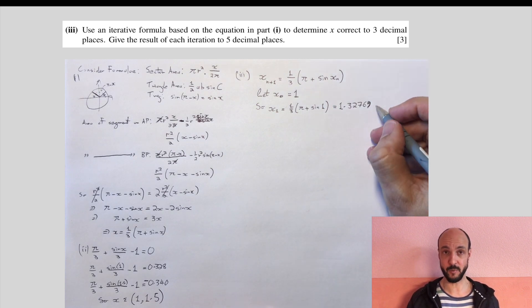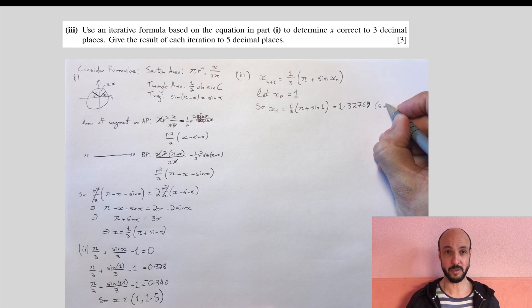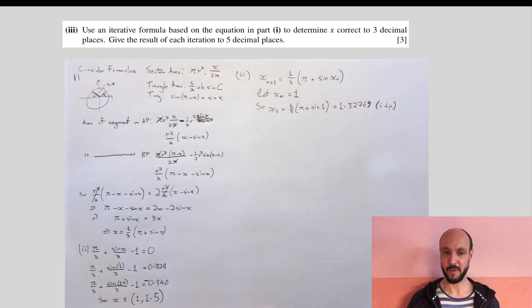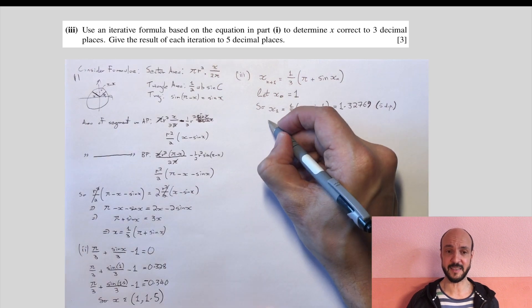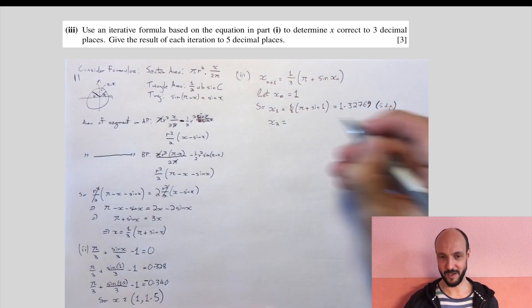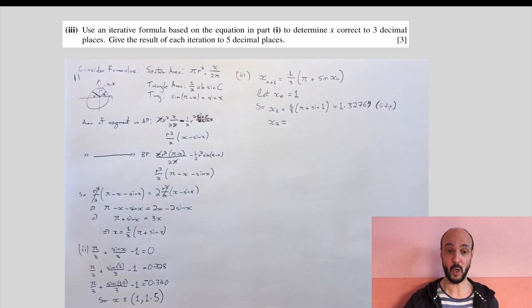and we'll put in one as our first guess, close brackets, because we know it's in the interval one to 1.5. I mean you could try 1.25 if you wanted in the middle, you'd still get the correct answer. But we'll just keep things simple, we'll put one, and the calculator gives us the answer 1.32769. So we know our second guess, our first guess was one, our second guess is 1.32769.